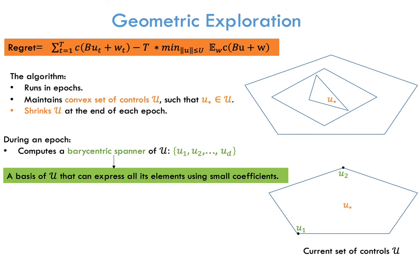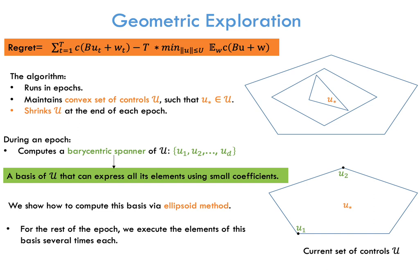the algorithm computes a barycentric spanner of the convex set U, which is a set of D vectors, where D is the dimension. Roughly, this is a basis of the convex set U that can express all its elements using small coefficients. In the figure, the two controls U1 and U2 are the elements of a barycentric spanner for this convex set. In the paper, we show how to compute this basis for the convex sets that we construct in polynomial time using the ellipsoid method.